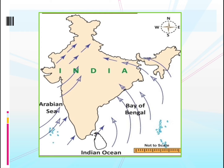With that water vapor, the air moves towards the land, and when it's moving towards the land it starts raining. In this way, the air from the sea carries lots of water vapor and when it reaches the land, it brings rainfall to us.